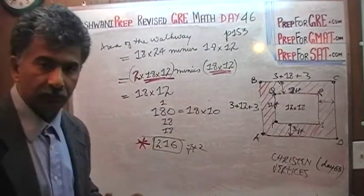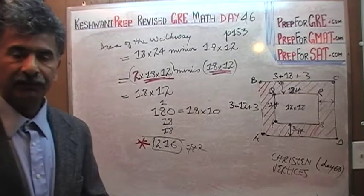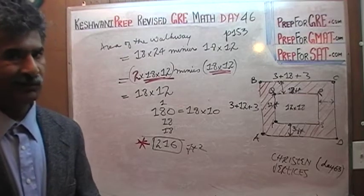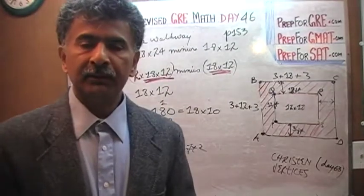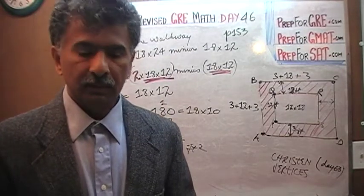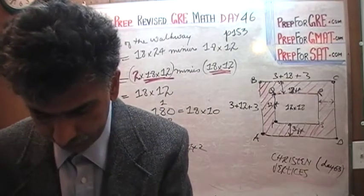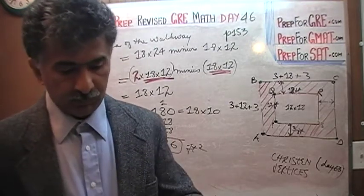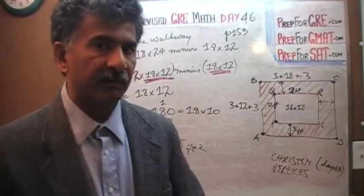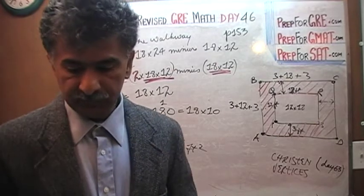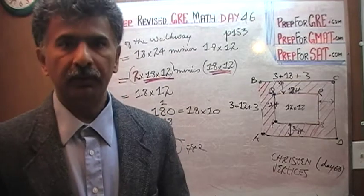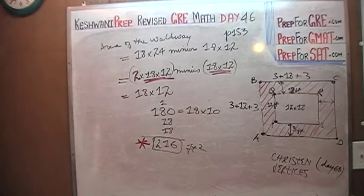Anyway, that was it — we are done for today. 216 square feet is the area of the walkway. Tomorrow on day number 47, we will do a similar question classified as a hard question. When it was given on the real exam, only 36% of people got it right — about 64% had trouble with it. I will see you then. Bye.